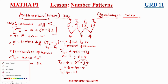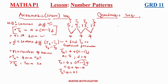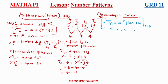A quadratic pattern has a general formula of Tn = an² + bn + c. This is the general formula for a quadratic pattern. Here, 'a', 'b', and 'c' are just constants — they are numbers.